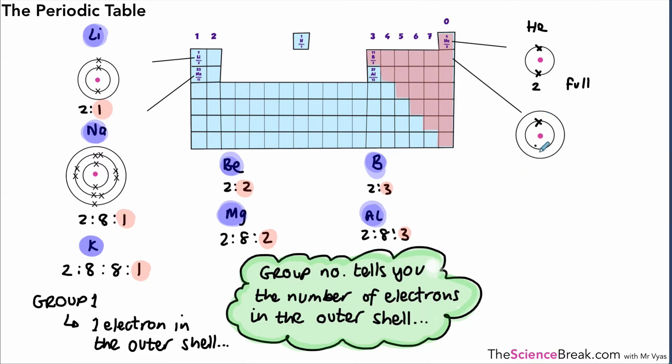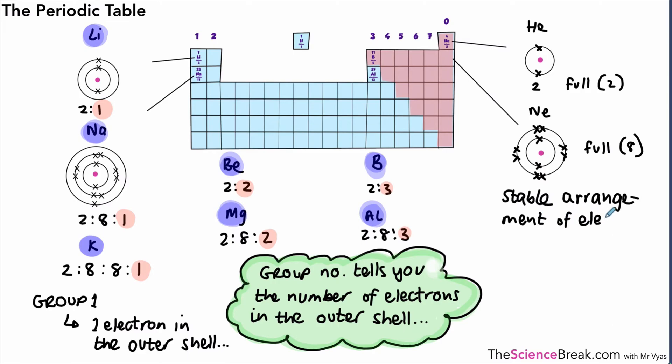If we went further down, that's actually neon. If we went further down, we would see that the outermost shells are full for all the elements in group 0. The way we describe that is we say we have a stable arrangement of electrons—a stable arrangement of electrons in all elements in group 0. And that makes those elements very unreactive.